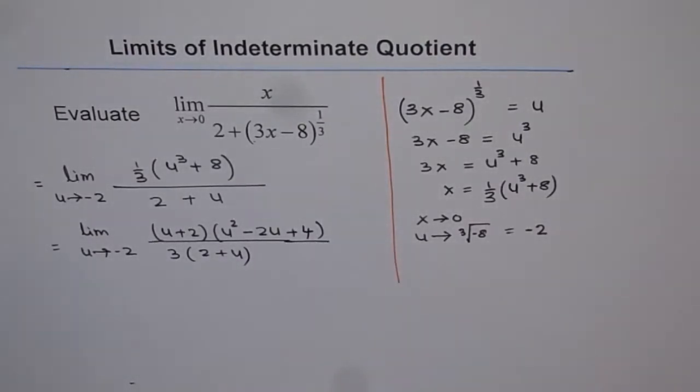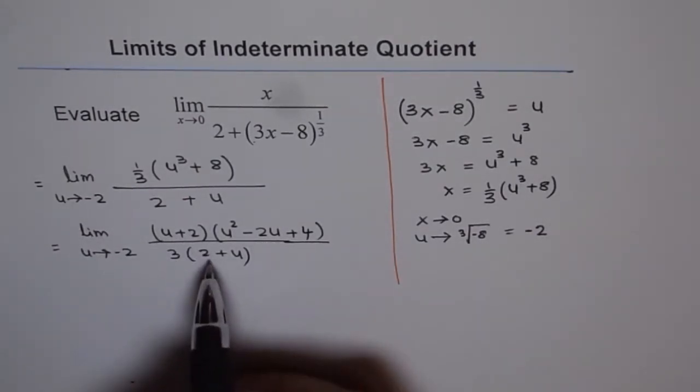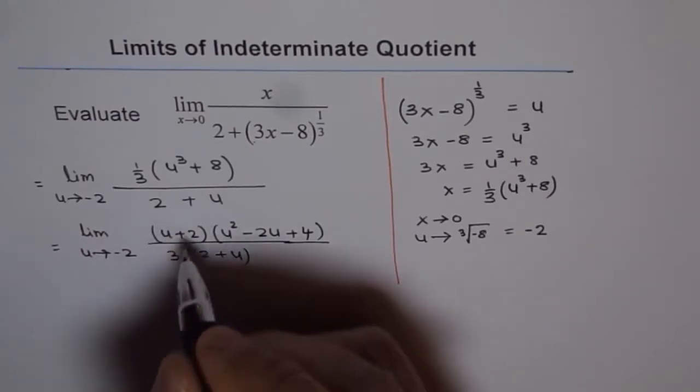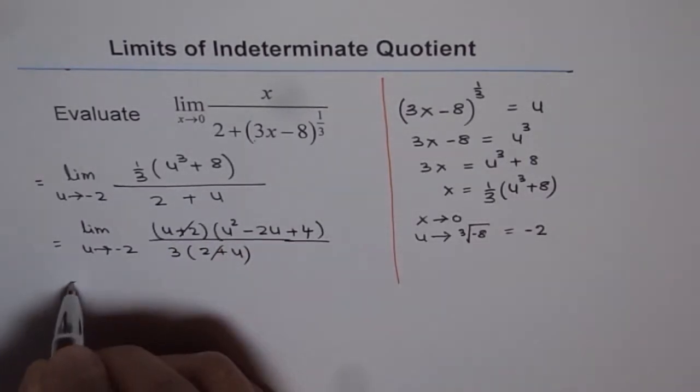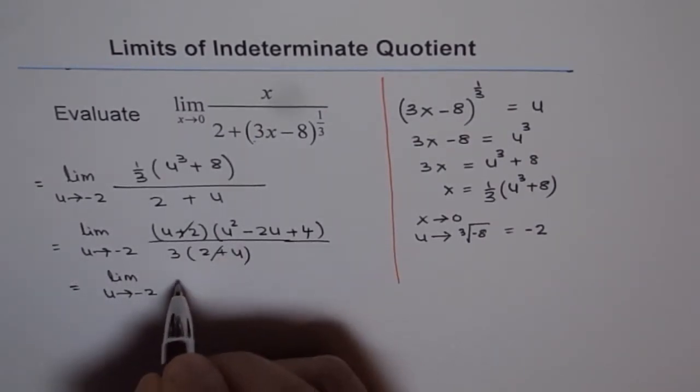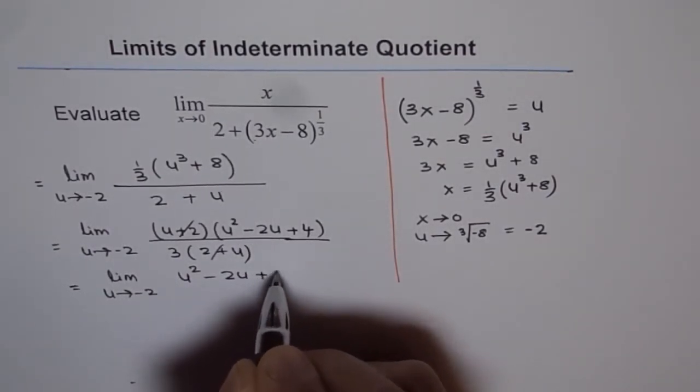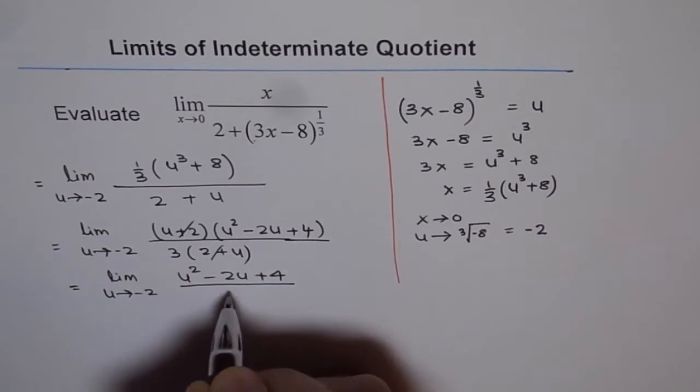So that is what we get. The important thing here is that we have a factor u plus 2 in both numerator and denominator, which can be cancelled now. And so we get limit u approaches minus 2. And the numerator, we have u square minus 2u plus 4 over 3.